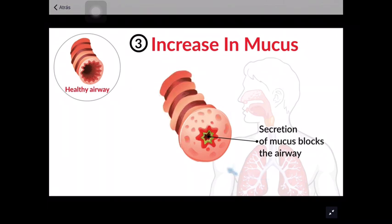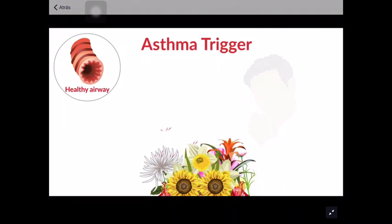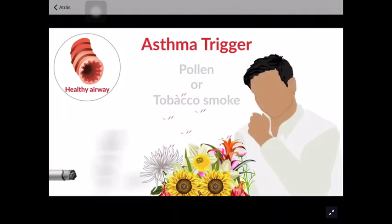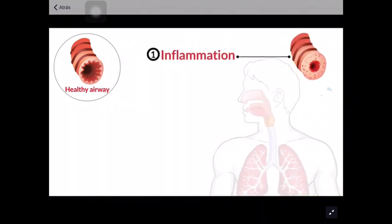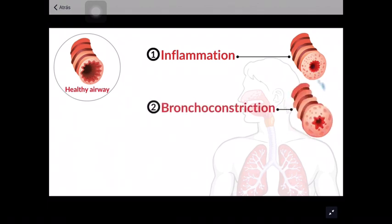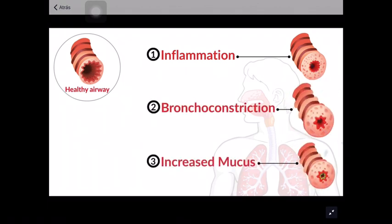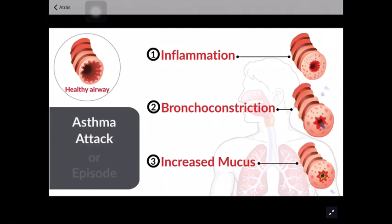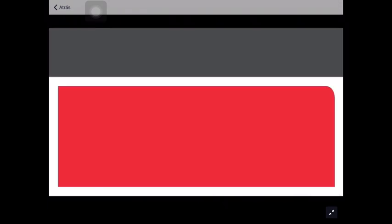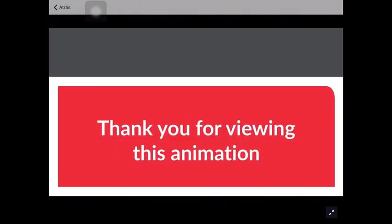When someone with asthma comes in contact with an asthma trigger, such as pollen or tobacco smoke, one or all three of the processes — inflammation, constriction, increased mucus production — can occur, all of which contribute to the narrowing of the airway. This is known as an asthma attack or episode. Thank you for viewing this animation from the American Lung Association.